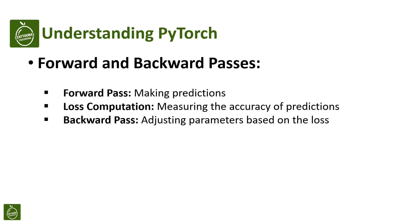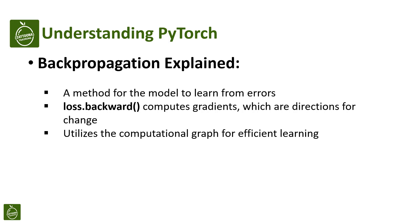PyTorch uses something called a computational graph to keep track of all this. The backward pass is about learning from the loss — the model adjusts its parameters to try and get better. Back-propagation is a bit like the model looking back at its work and learning from its errors. It uses the loss to calculate something called gradients, which are like directions for the model to know how to change its parameters.